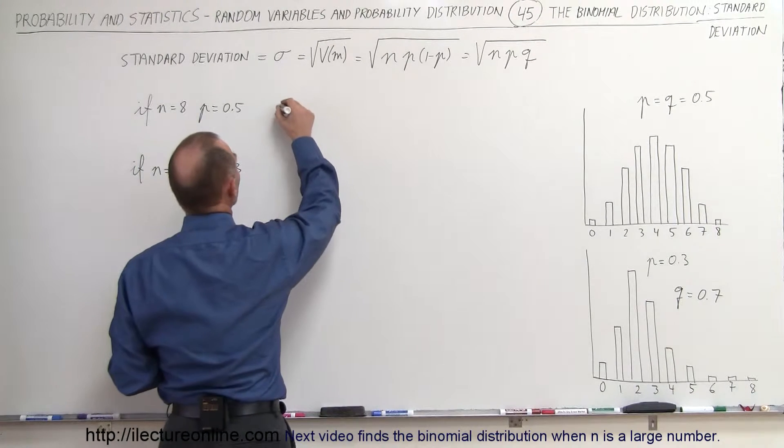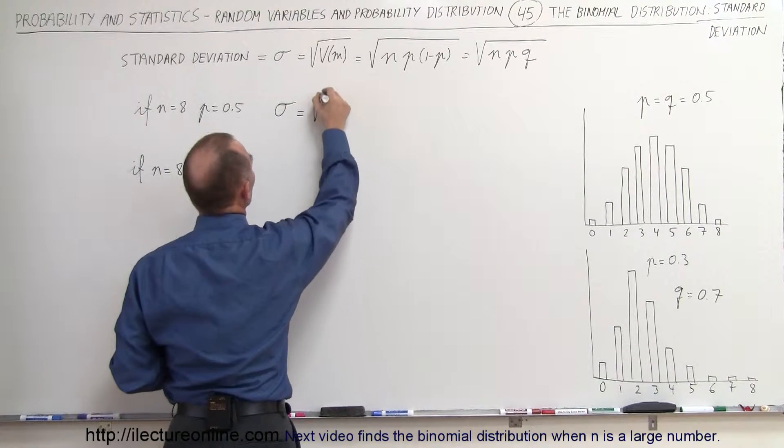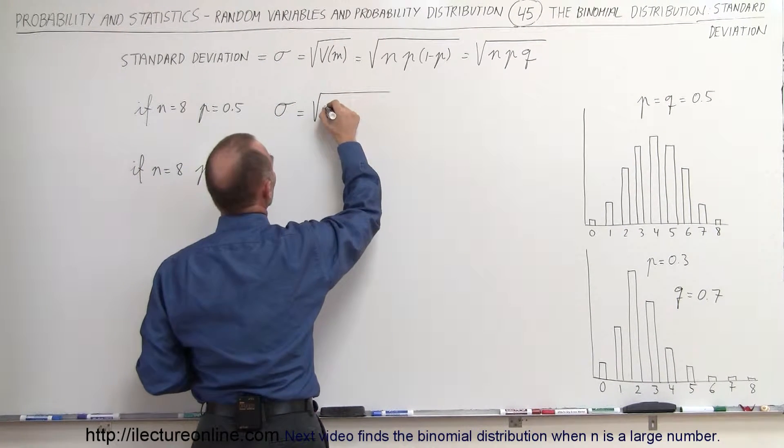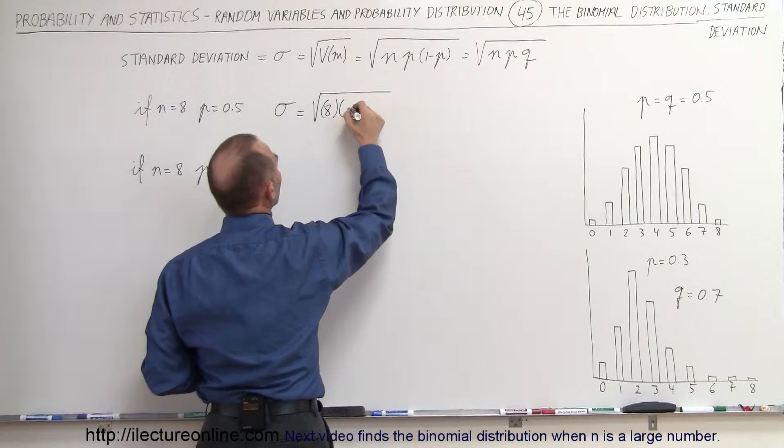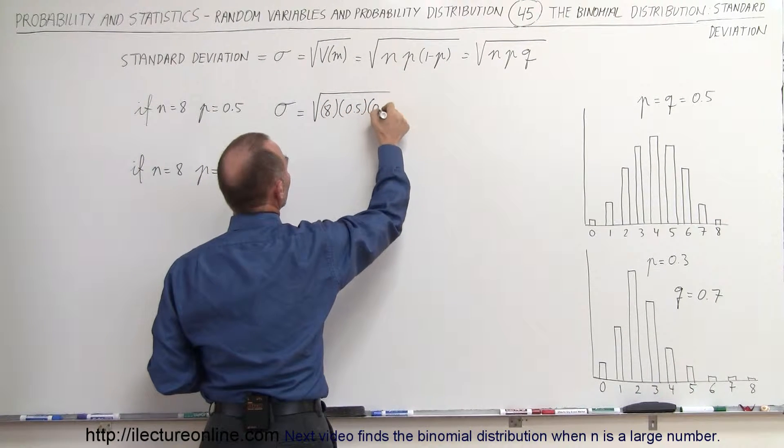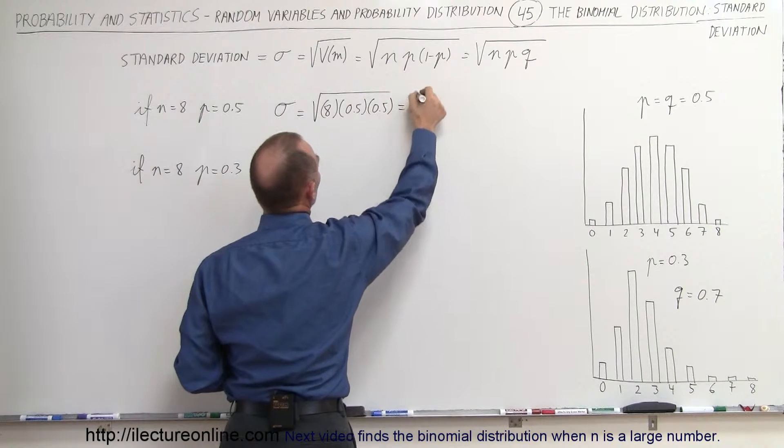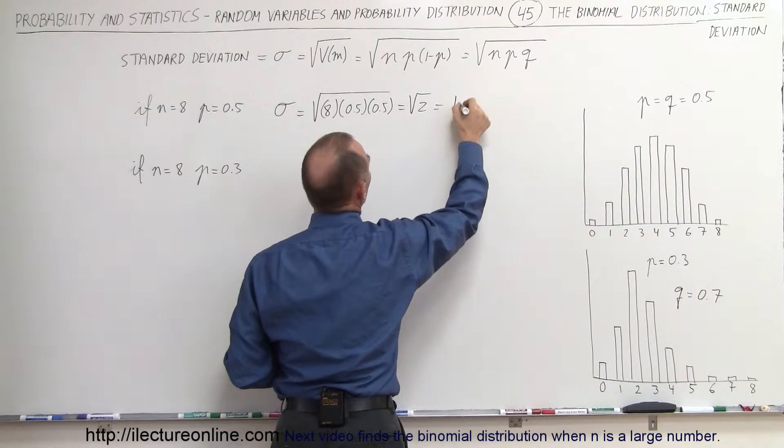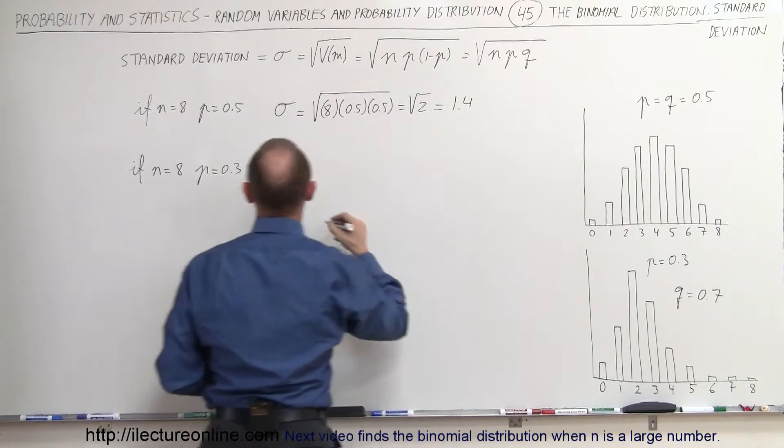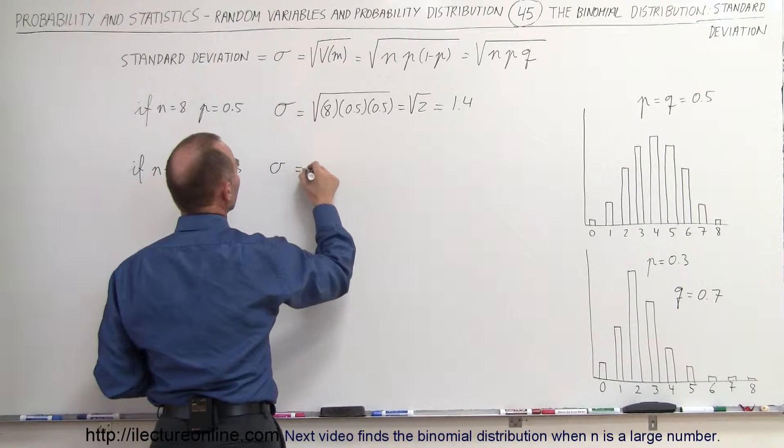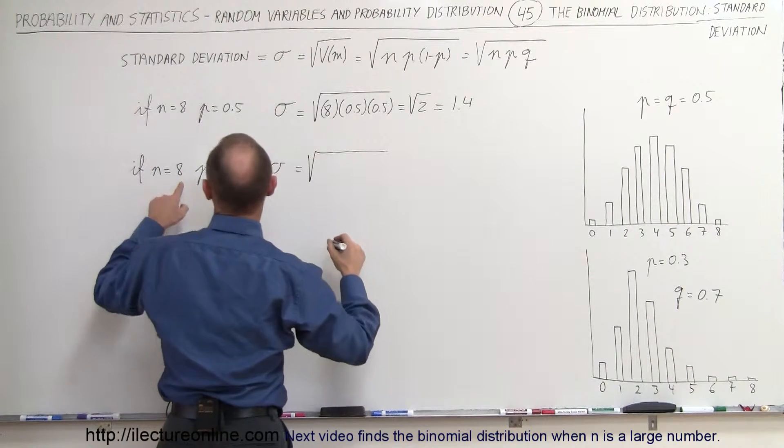So the sigma in the first case is going to be equal to the square root of, that would be eight trials times the probability of 0.5 and the probability of failure 0.5, which is equal to the square root of 2, which is equal to 1.4.